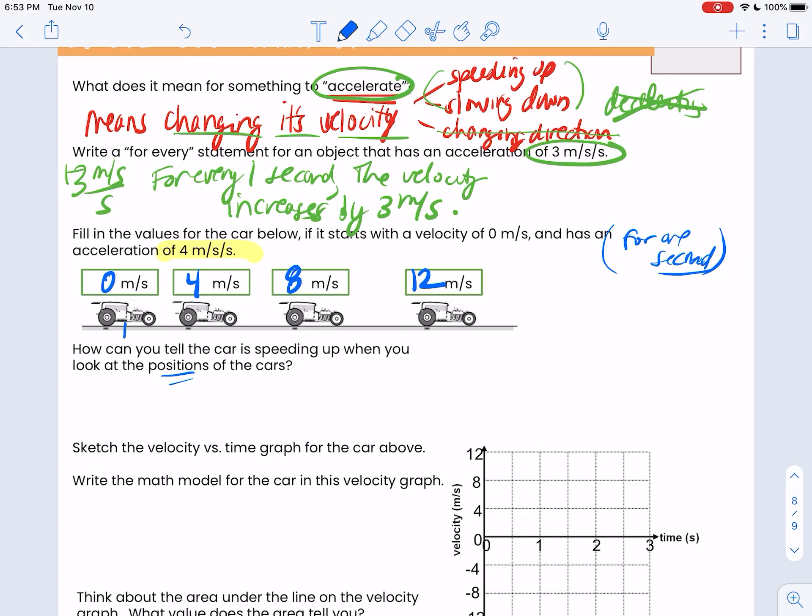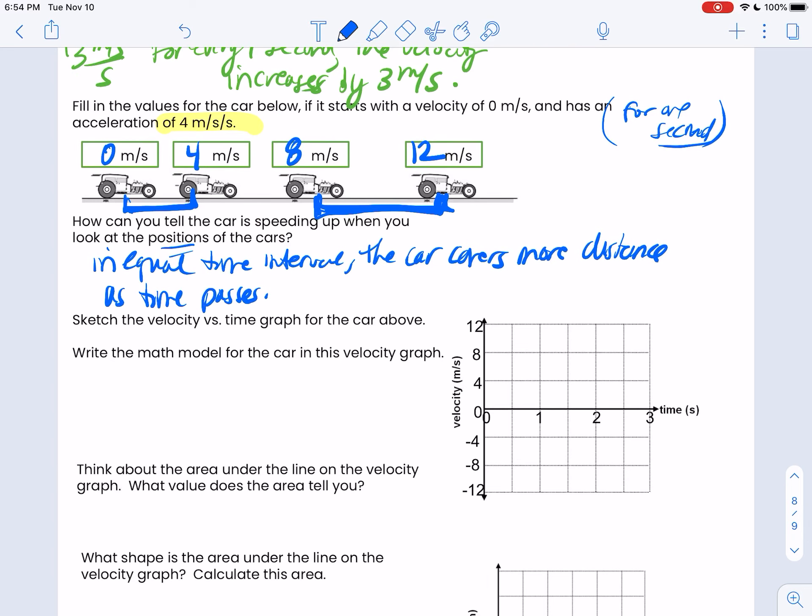When I look at the positions, I can see that in equal time interval, so look at this as an equal time interval, 0 to 4 and 8 to 12, the car covers more distance as time passes. When you get to a later time, the car is going faster. So in that same second, it's going to travel further. So if we wanted to do this, we would say 0, 4, 8, 12. So my velocity graph would look like this.